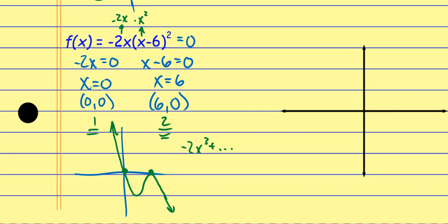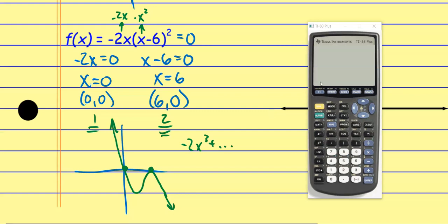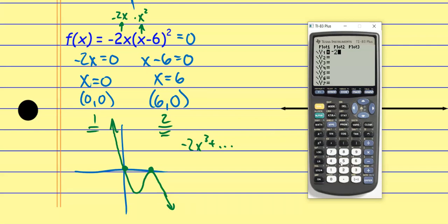The end behavior all matches up and I kind of have an idea what this graph looks like, but let's go get a more accurate representation. On the graphing calculator, I go to the Y= menu. Make sure you use the negative sign — that's down here. It's in parentheses: negative 2, then x, then parentheses with x minus 6 squared. Be careful: there is a slight distinction between the negative sign and the minus sign on the graphing calculator.